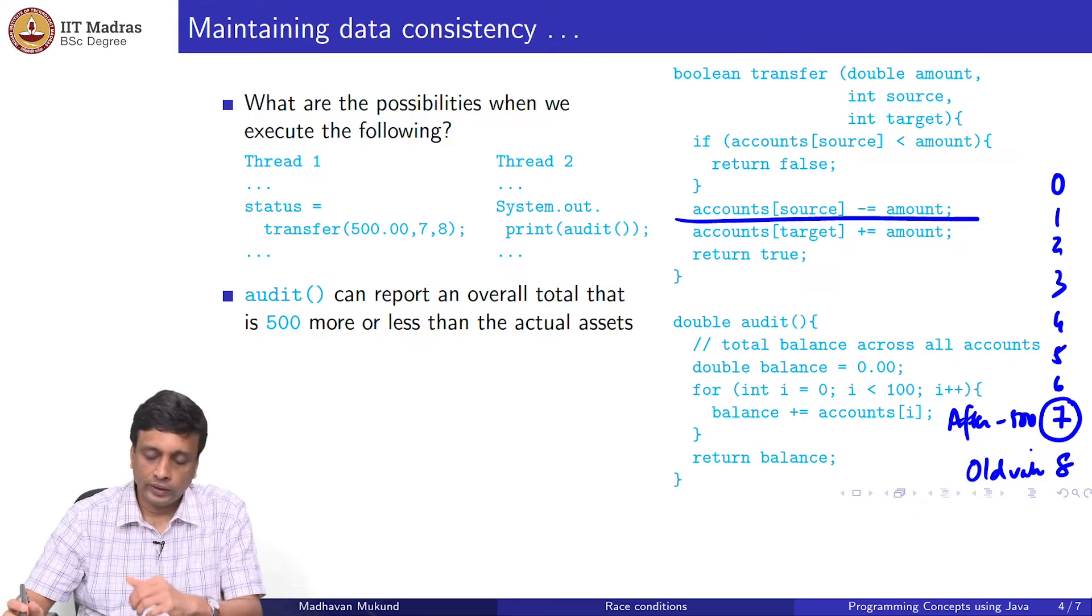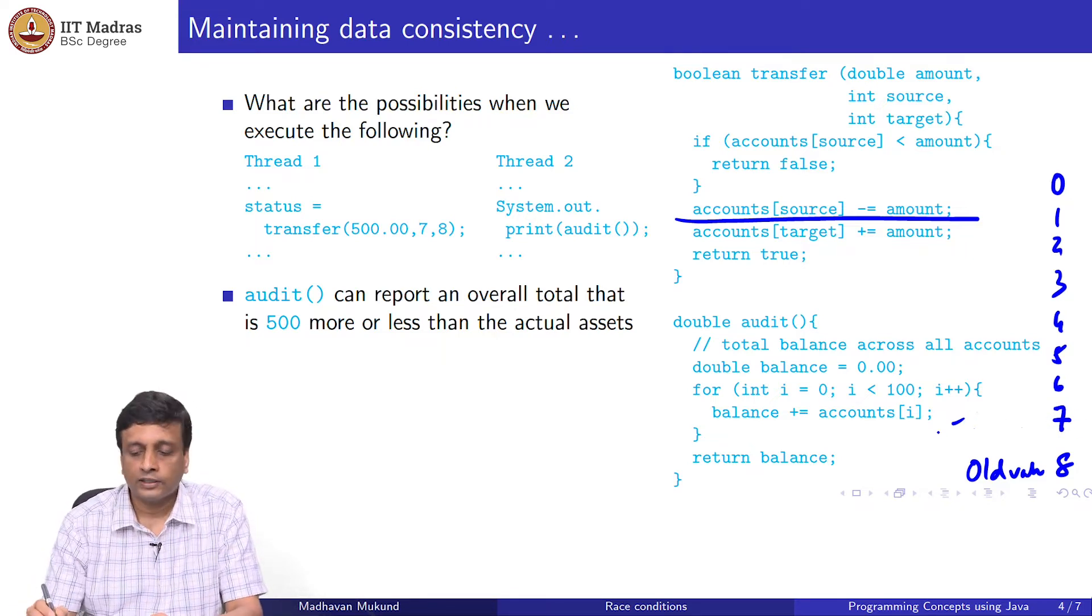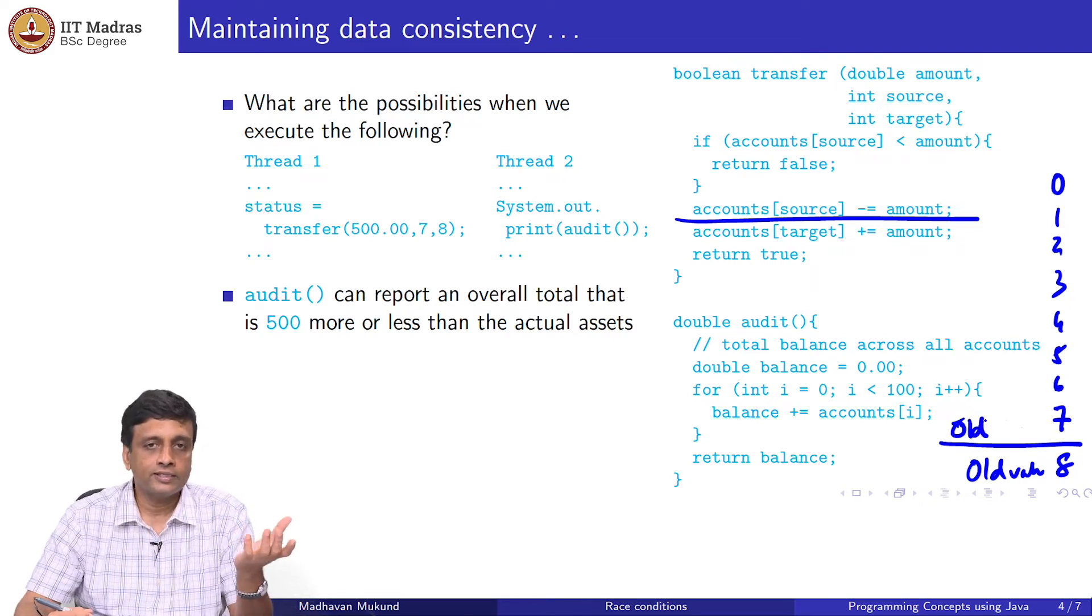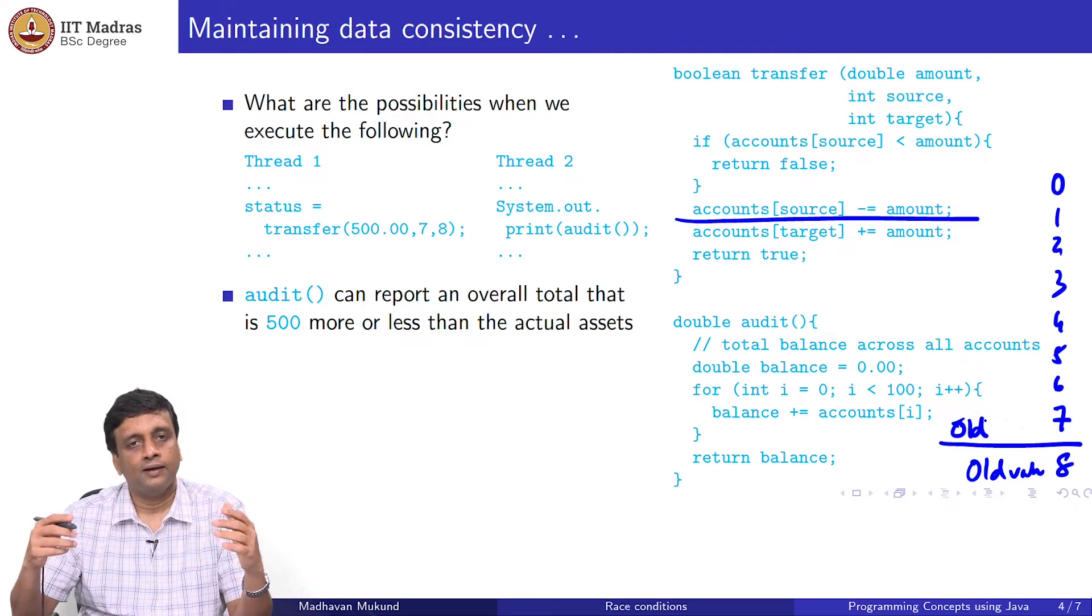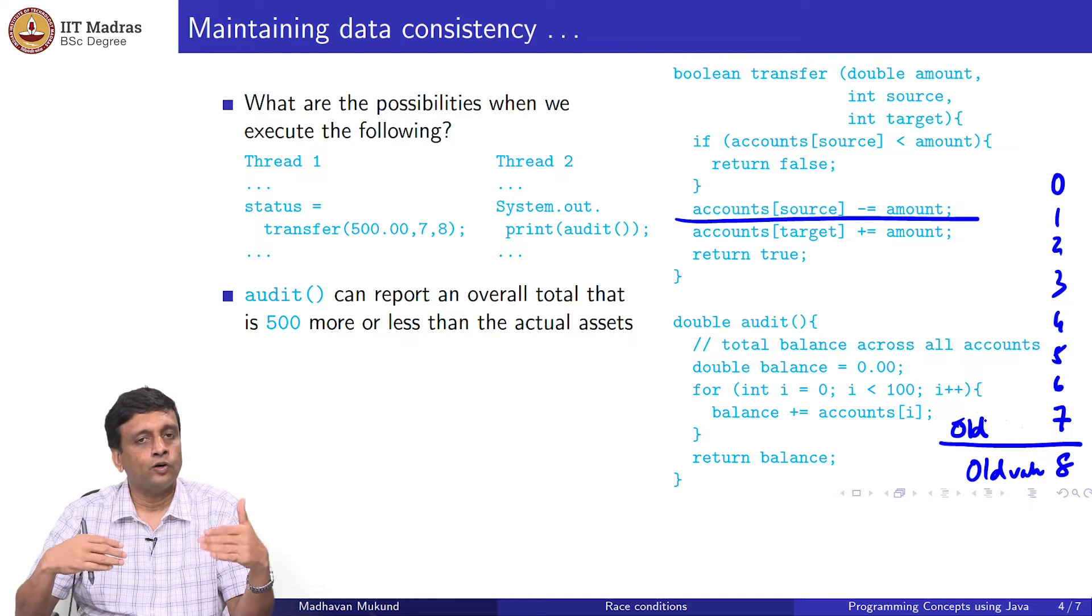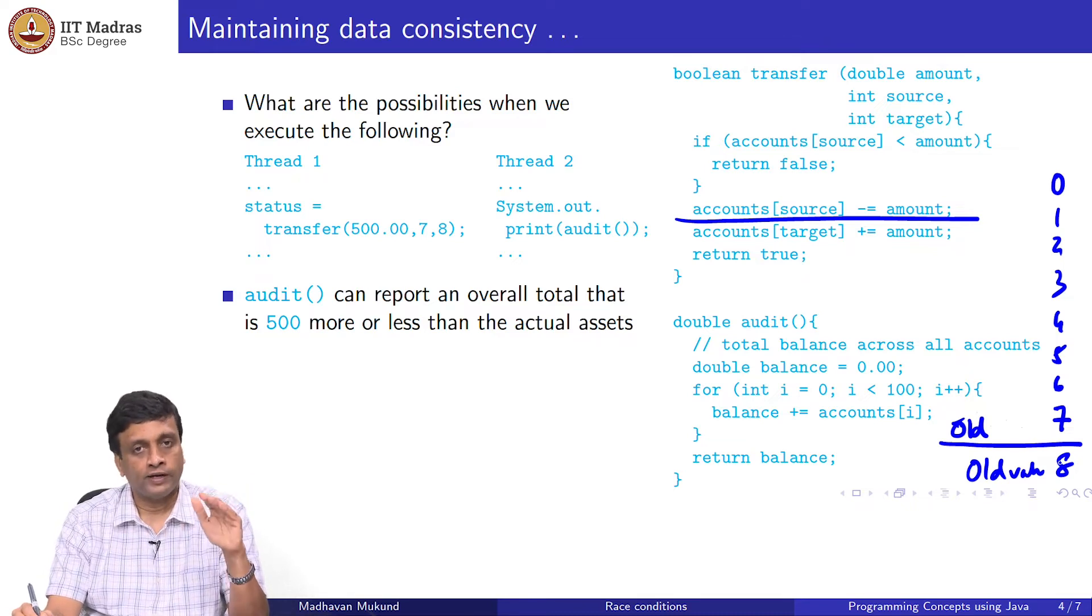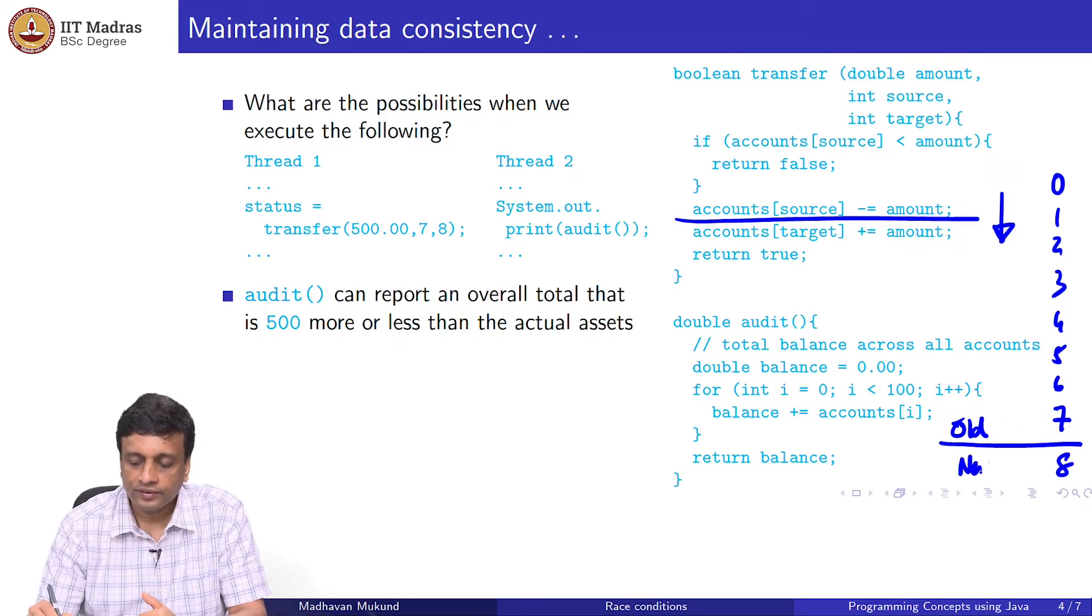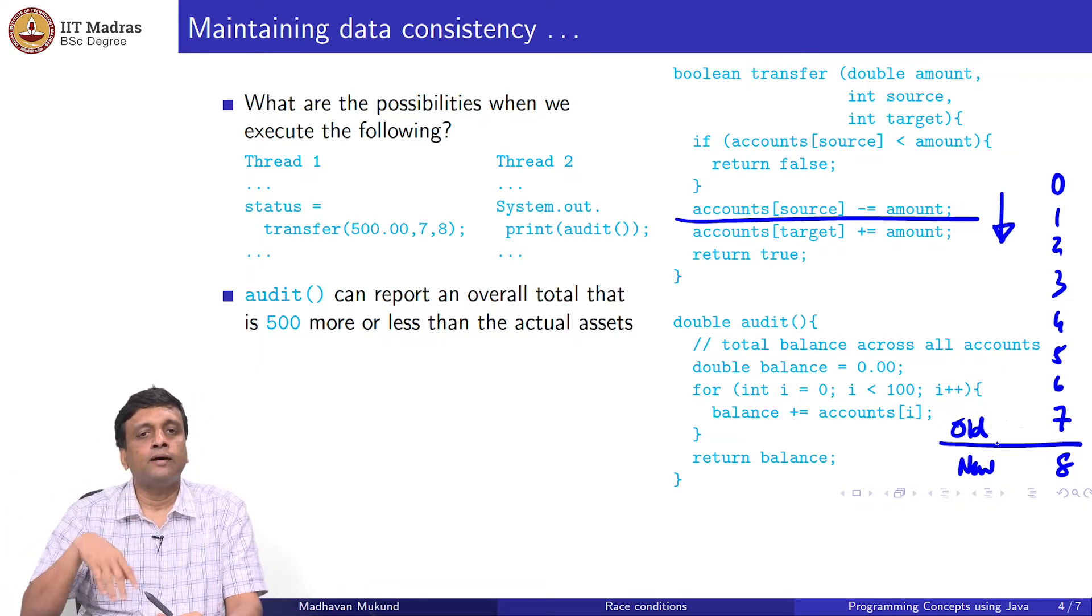How could it be 500 more? Well, supposing I did the following. The audit actually reached 7, and at this point I got the old value of 7. No money has left 7 yet, so I got the old total. Then the audit for some reason stopped. Remember that these are all happening in parallel. We are interleaving the operations. Each step might happen in a different order with respect to the other thing happening in parallel. I stop at 7, and now the audit has the old value of 7 before 500. Then this happens in the transfer. Now you see the new 8. You see the 500 added to 8, although you did not see the 500 subtracted from 7. You actually have a total which is 500 more than you believe.